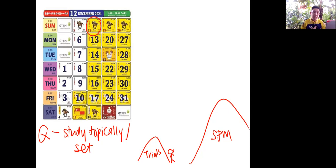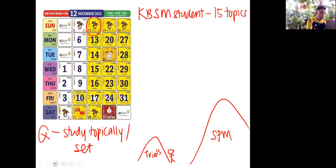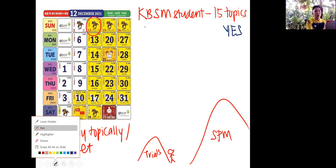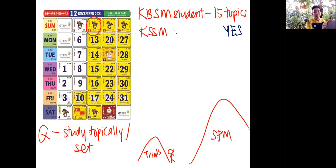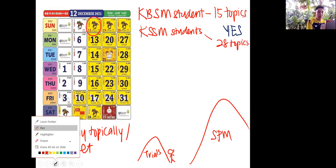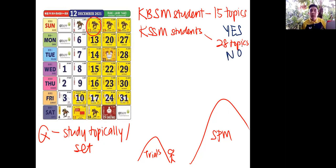Should you go about biology by studying topically? If you study topically, my advice is: if you are a KBSM student, like last time whereby you only have a total of 15 topics, I will straightaway say yes, please study topically. But at this moment, all SPM students are KSSM students. So for biology there are a total of 28 topics. My advice is a straightforward no. You should not read topic by topic.